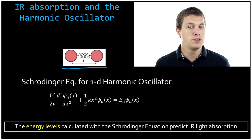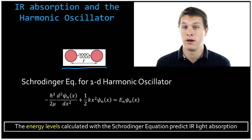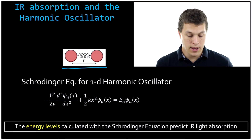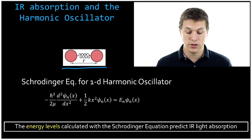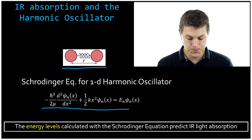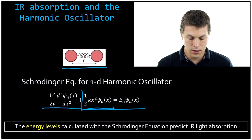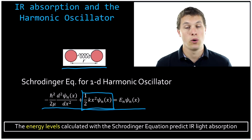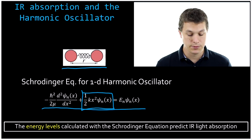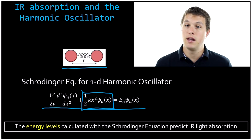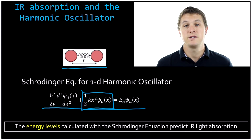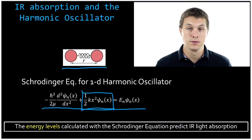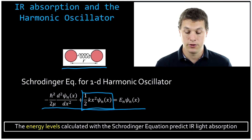Now, if we think about that, it takes energy to pull them apart, and it actually takes energy to squeeze them very close together. So what happens is they end up vibrating back and forth a little, and we can model those vibrations using the Schrödinger equation. I've written down the Schrödinger equation with our potential right here being the potential for our harmonic oscillator, and we're going to use the energy levels that the Schrödinger equation spits out to calculate the light absorbed or, in some cases, emitted by a molecular system.